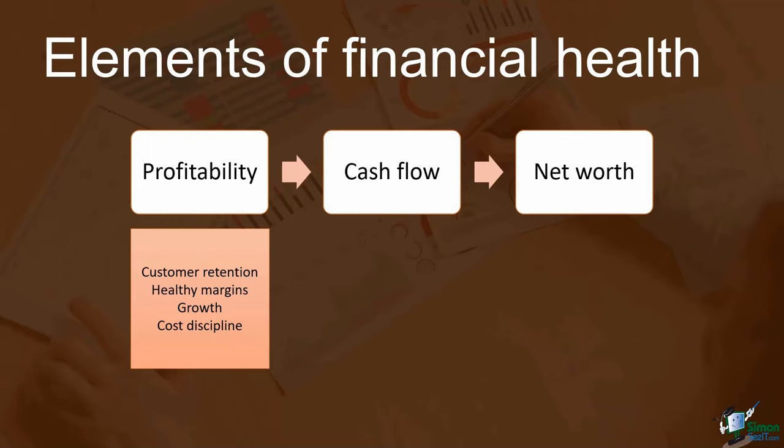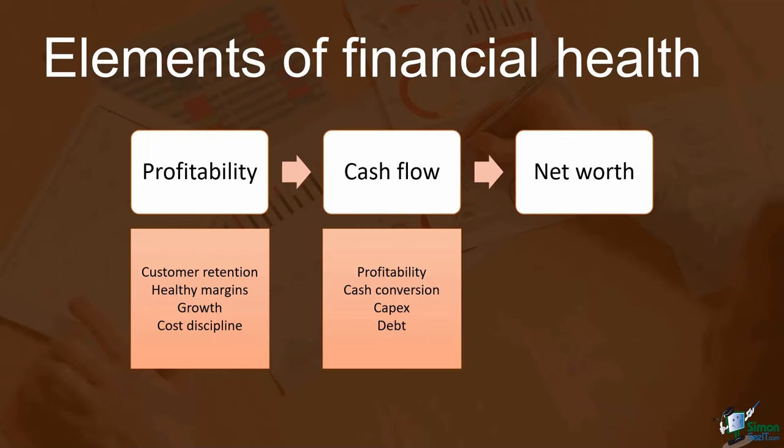Looking into cash flows: profitability is an important driver of cash flow, but the speed with which you convert assets into cash is also very important. Assets like accounts receivable and inventory have a big impact on cash flow, especially as the business grows. Capital expenditures (capex) are the purchases you make in longer-term assets necessary to sustain the existing business as well as to invest in future growth. Debt levels and debt service obligations play a large role in the sources and uses of cash from month to month.